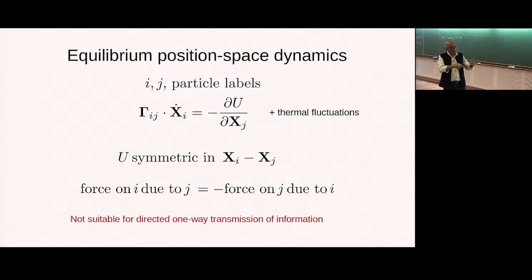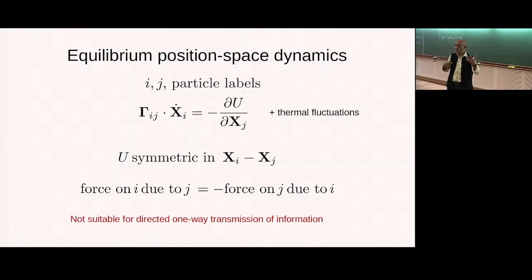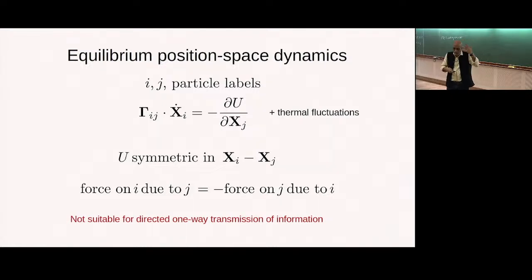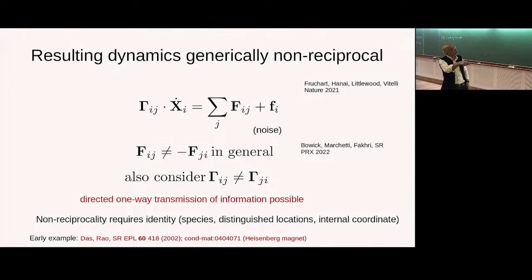Jumping from that picture to a picture of particle dynamics with positions x_i, you end up with an equation of motion with damping, noise, and forces from an energy function. Therefore, if you take two particles i and j, the force on i due to j is minus the force on j due to i. If this is all that's going on, you can't get what one might think of as directional transmission of information. In a system where detailed balance is broken, you can hope for dynamics that is generically non-reciprocal. Such systems allow directional transmission of information, and interactions become non-reciprocal in the sense that these forces don't cancel.